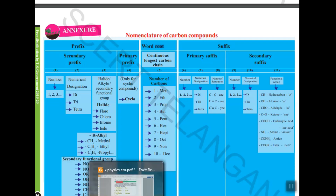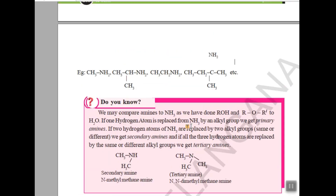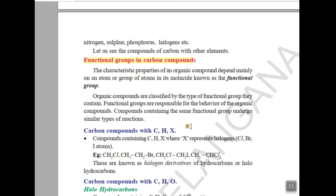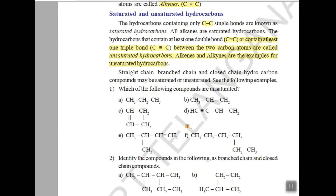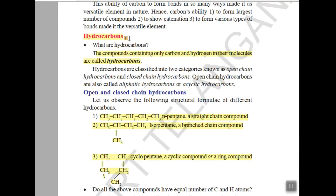I'm opening your textbook PDF and continuing from where we left off. We have already covered the versatile properties of carbon. After that we have a topic known as hydrocarbons — compounds where carbon combines with hydrogen. Any molecule which has carbon and hydrogen is known as a hydrocarbon. Hydrocarbons are divided into two types: open chain and closed chain.